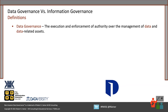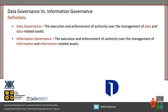I define data governance as the execution and enforcement of authority over the management of data. The reason why we're putting governance in place is to make certain that the right people are doing the right thing in the right way with data across the organization. Information governance uses the same definition — it's the execution and enforcement of authority over the management of information. The key question becomes how does information differ from data? We can still use the same definition even if we call it information.